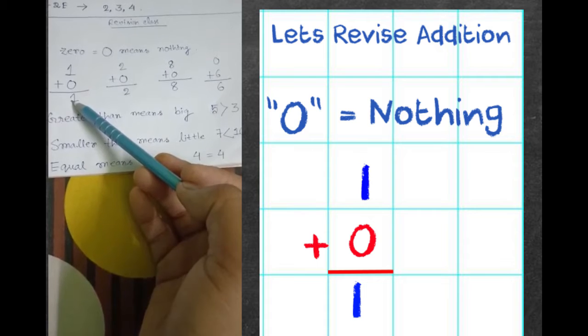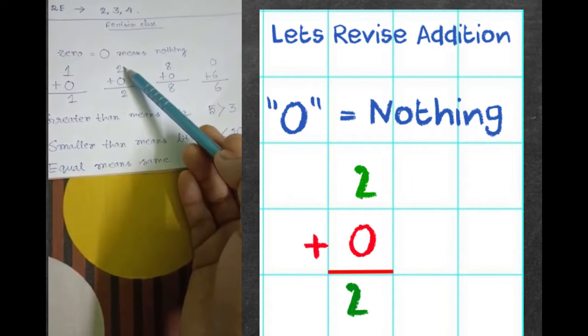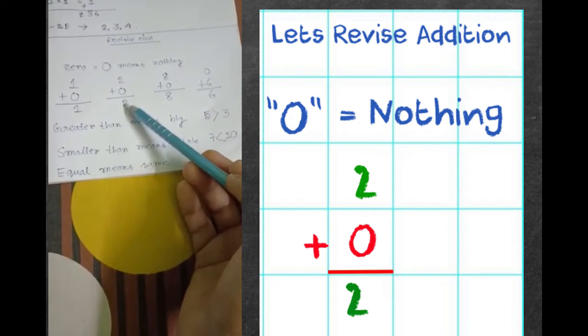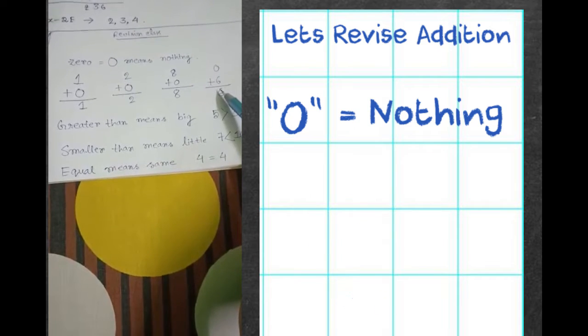Again the same. If we add zero to two, the number remains the same, two. Same here, eight plus zero equals eight, and zero plus six is also six. Okay.